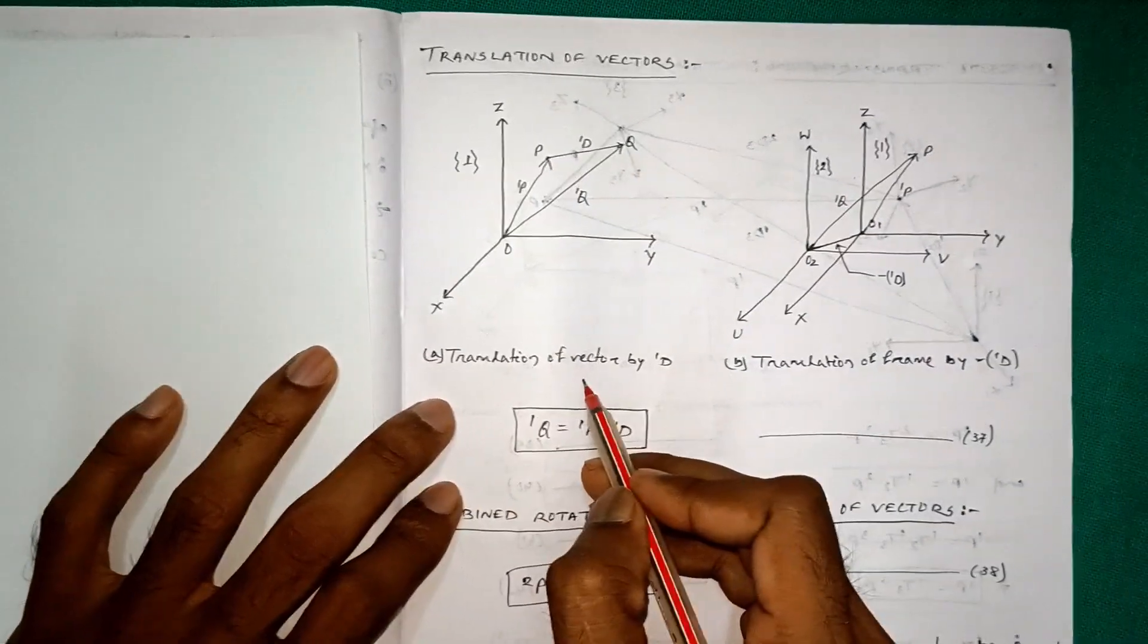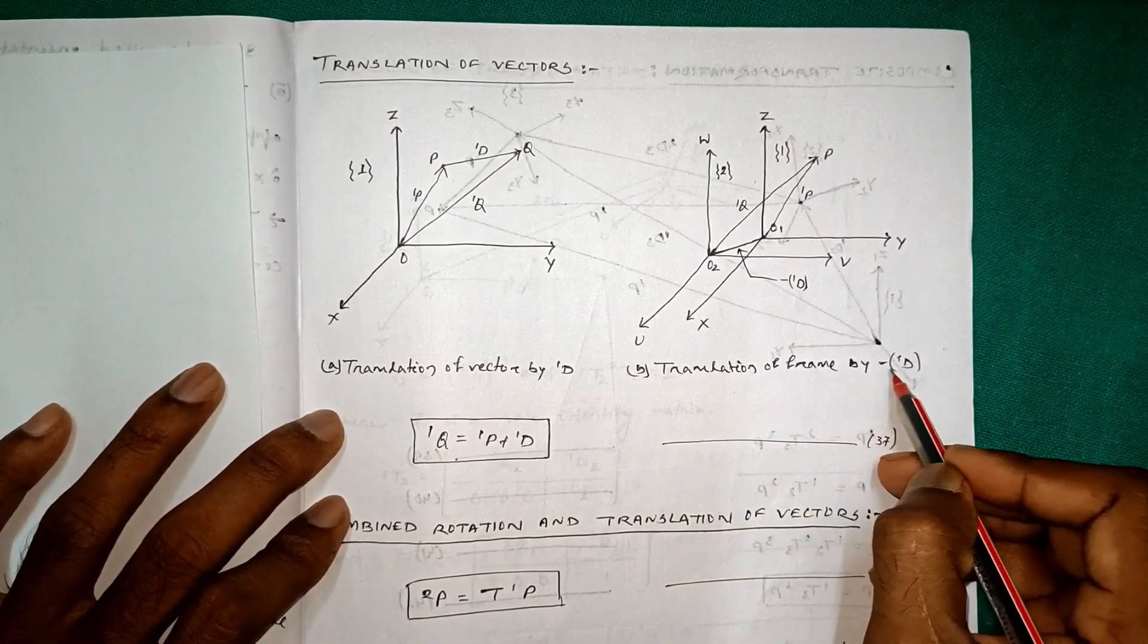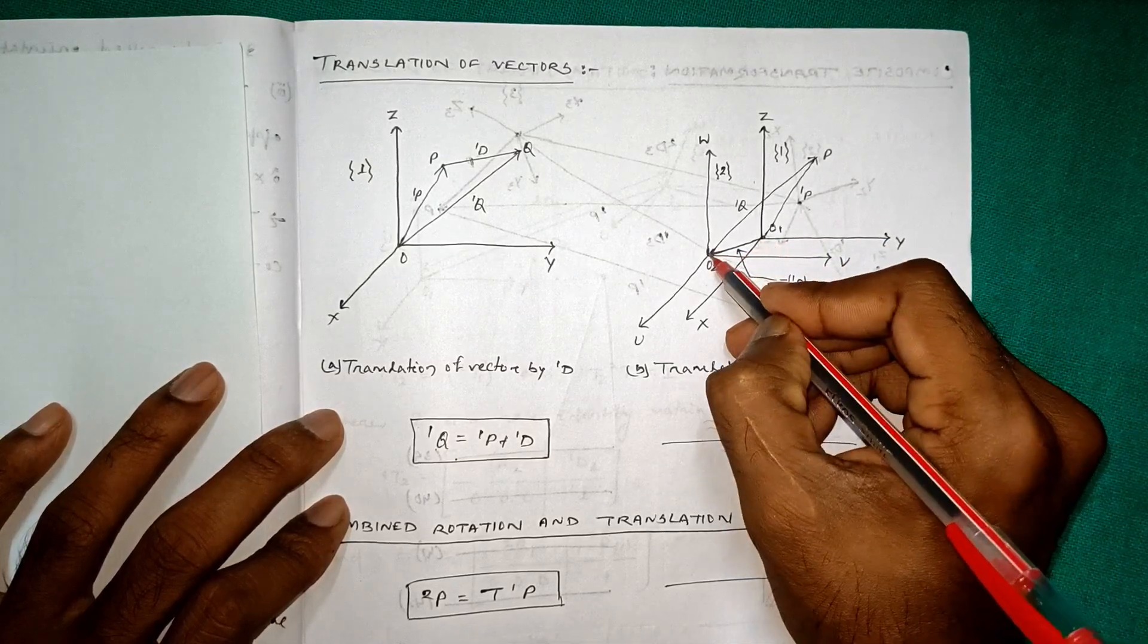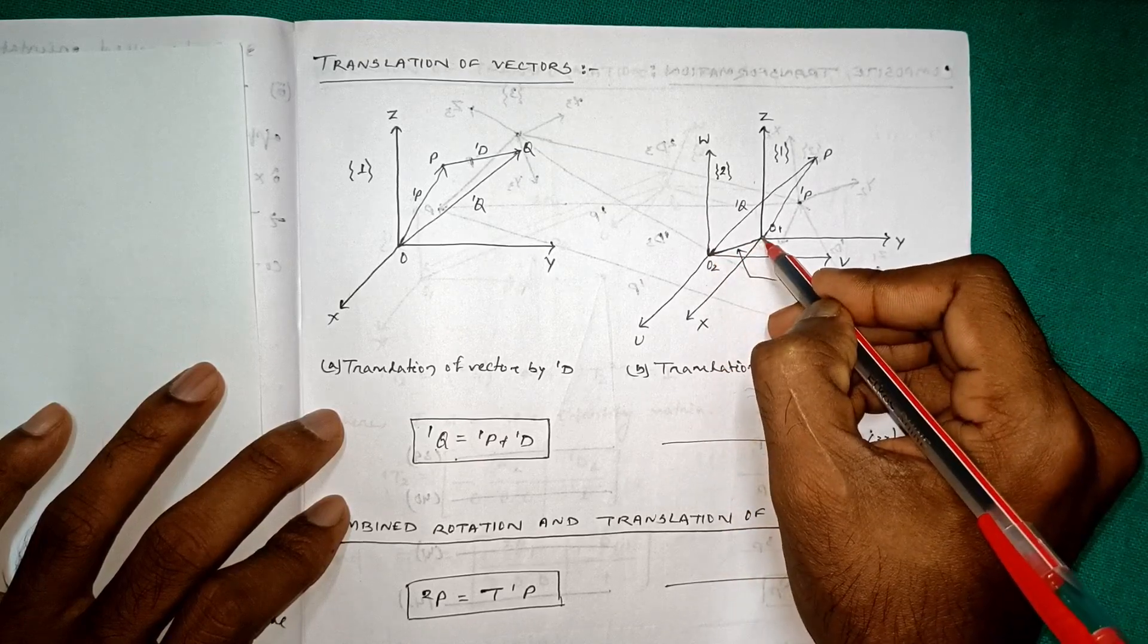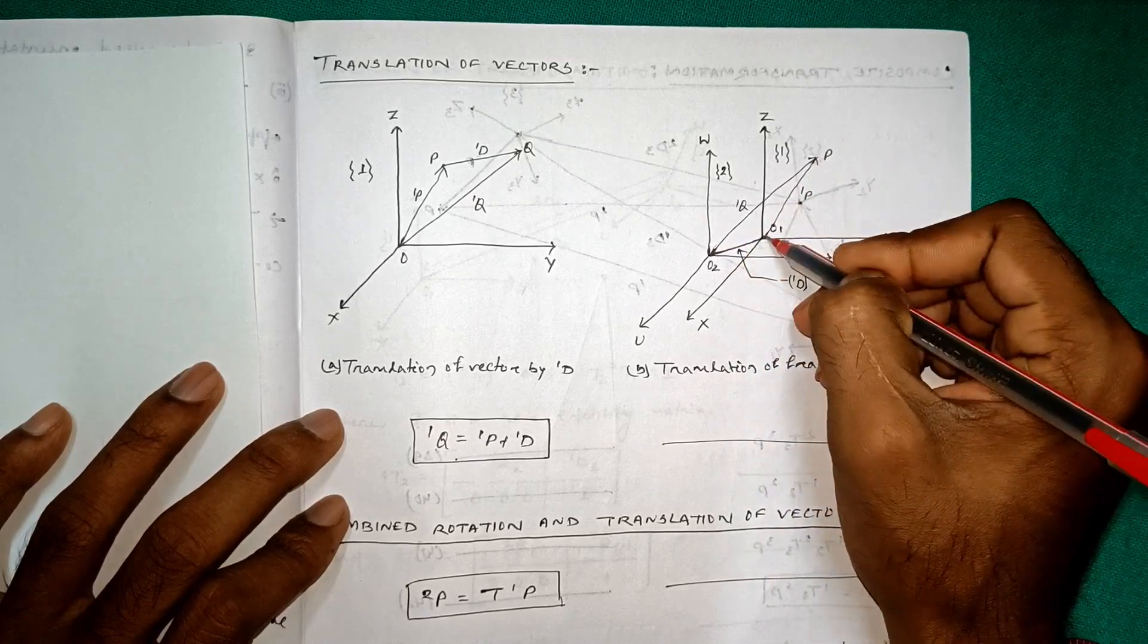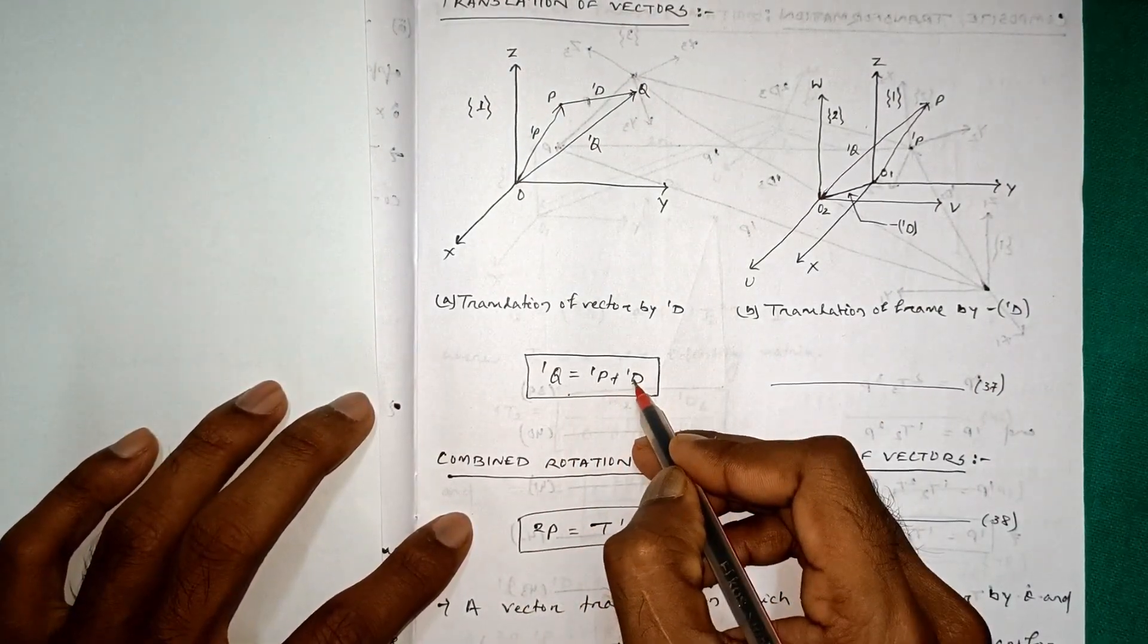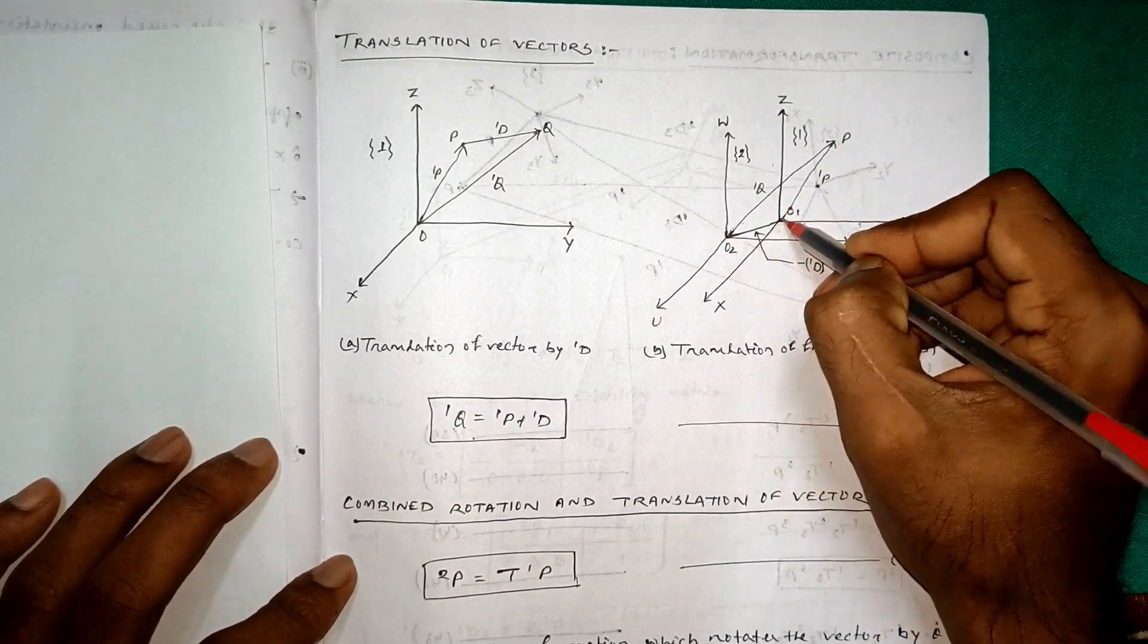The translation of vector by 1D, and in the second figure we will see the translation of frame by minus 1D. This is the minus 1D vector, that is from O1 to O2. Here the translation has been made through origins. This is the point P and this is 1Q and this is 1P. 1Q is equal to 1P plus 1D.